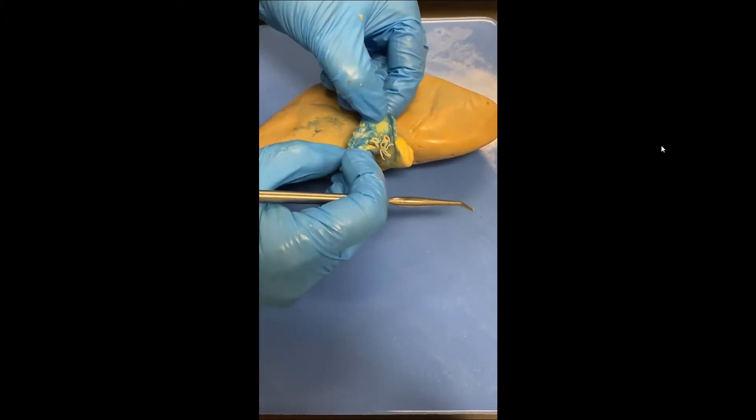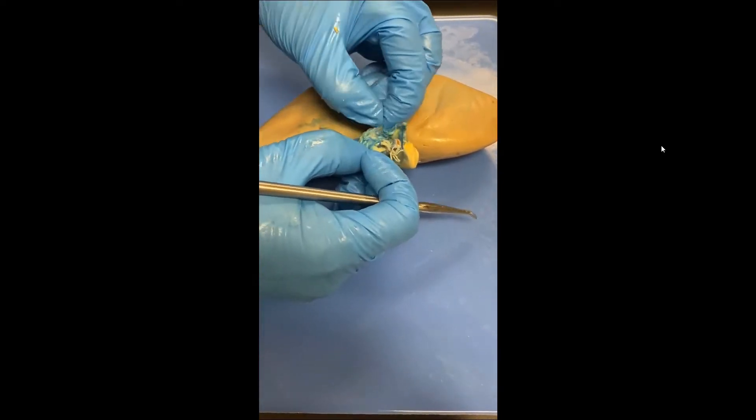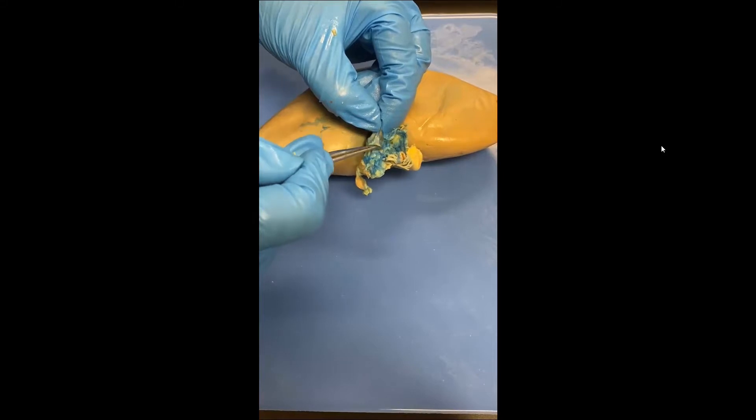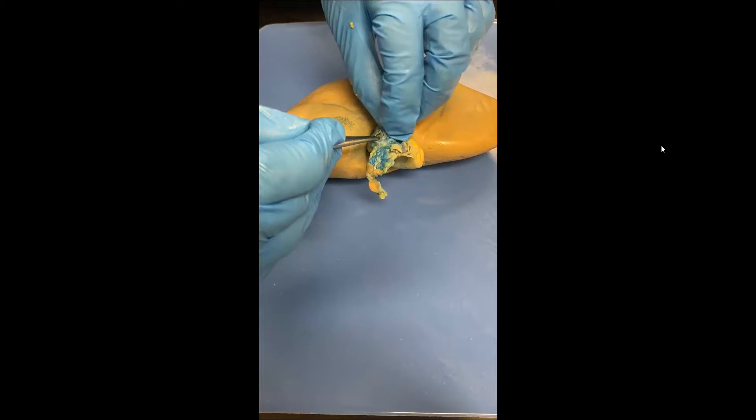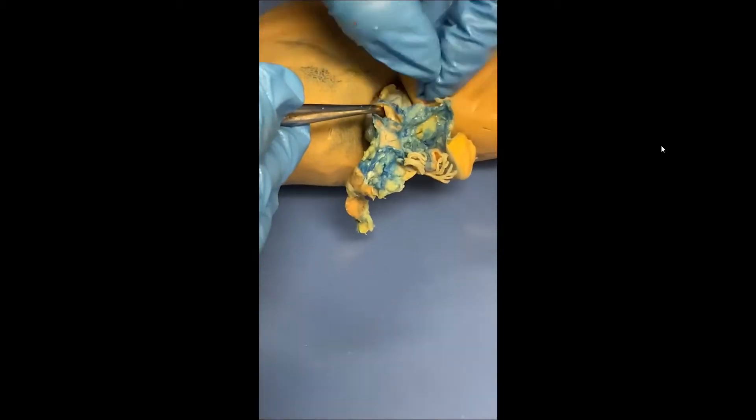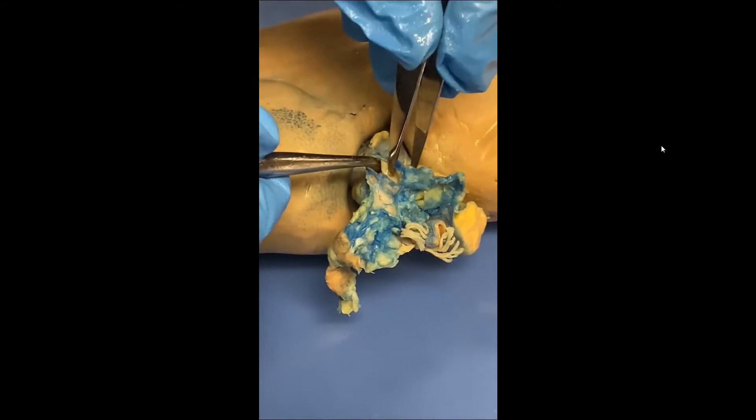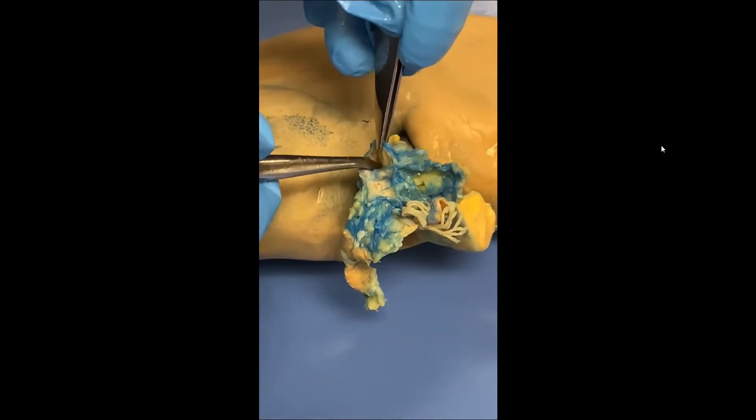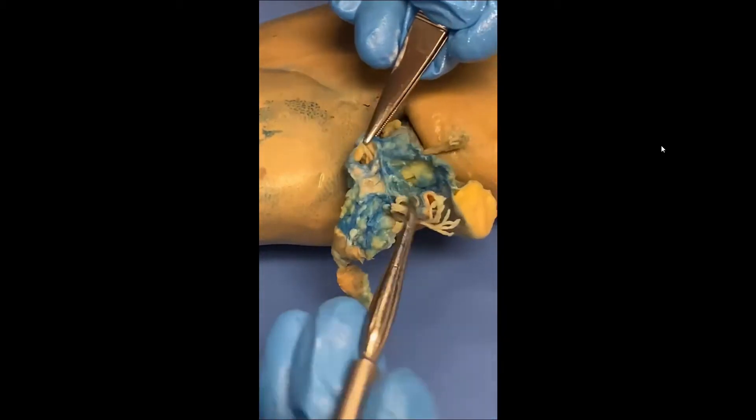We also need a renal vein. If you remember, veins have thin walls, and we can see him right here. That space right there. So that thin wall structure, and we're going to grab a pickup right here so we can see that. So right there is the renal vein. You can see how thin the wall is compared to the renal artery.